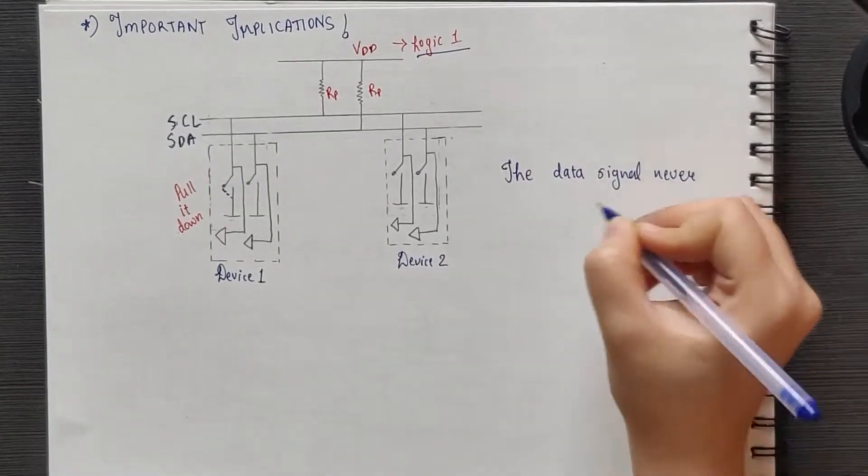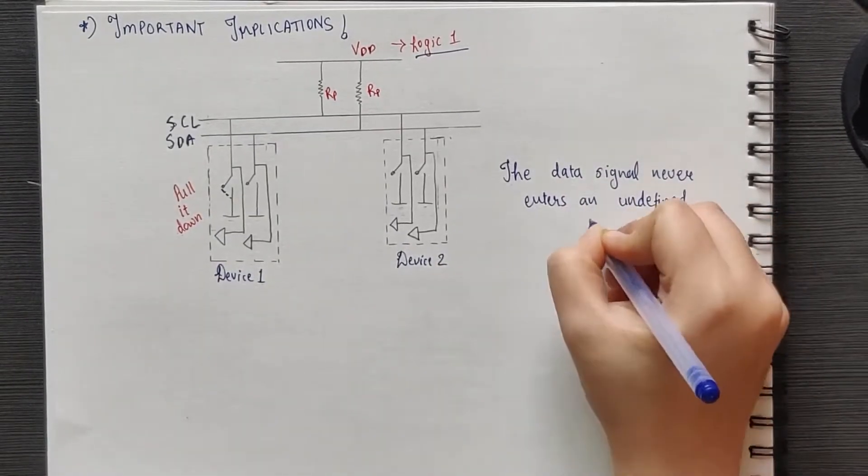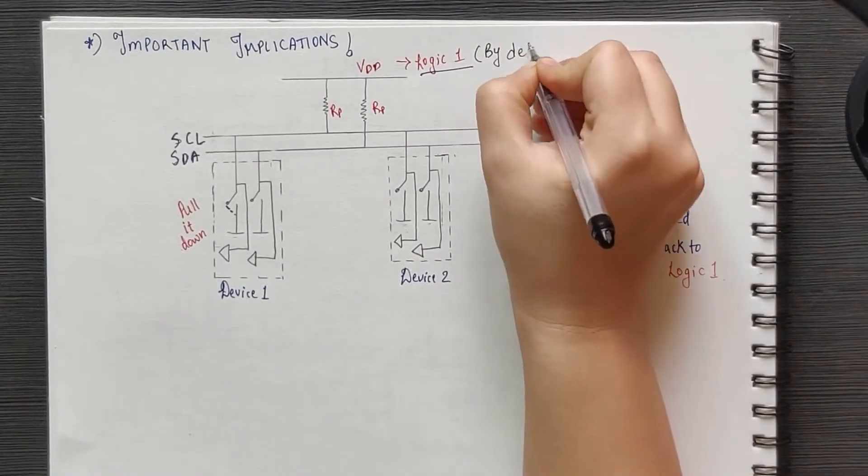If an I2C master communicates with a slave that has become, say, non-functional, the data signal never enters an undefined state. As the slave is not driving the signal, the data line will always be at logic 1.